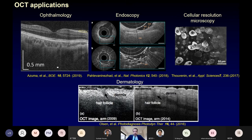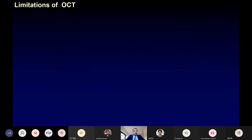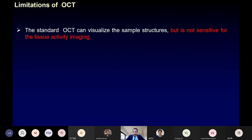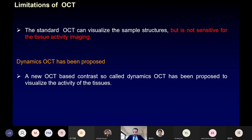Although OCT has wide clinical applications, it has one limitation: standard OCT can visualize sample structure but is not sensitive for tissue activity imaging. So we need a new contrast capable of tissue activity evaluation. This contrast is called dynamics OCT, and it is proposed for tissue activity imaging.